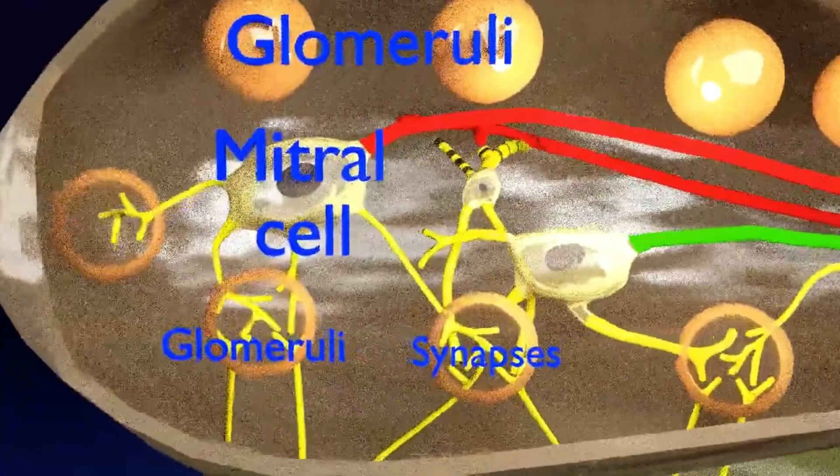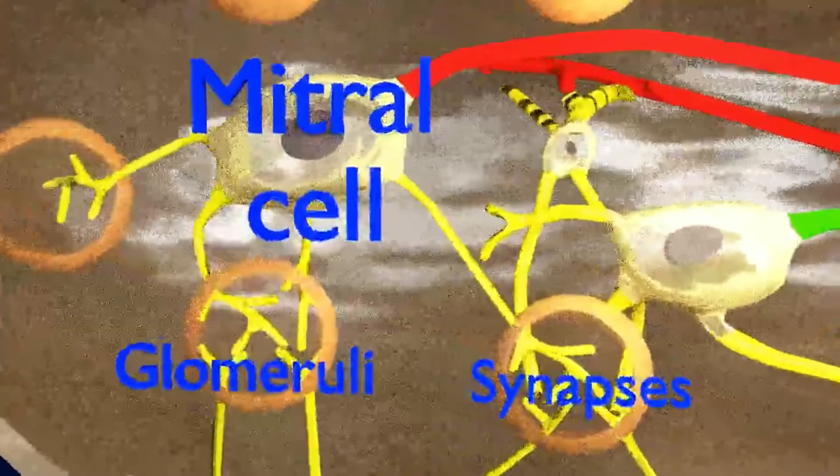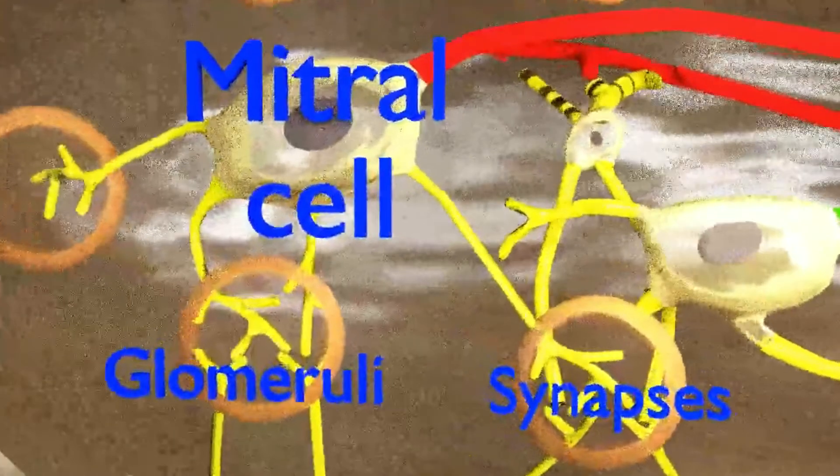You can see glomeruli colored in orange here. Each glomeruli is particular for similar odorant receptors.